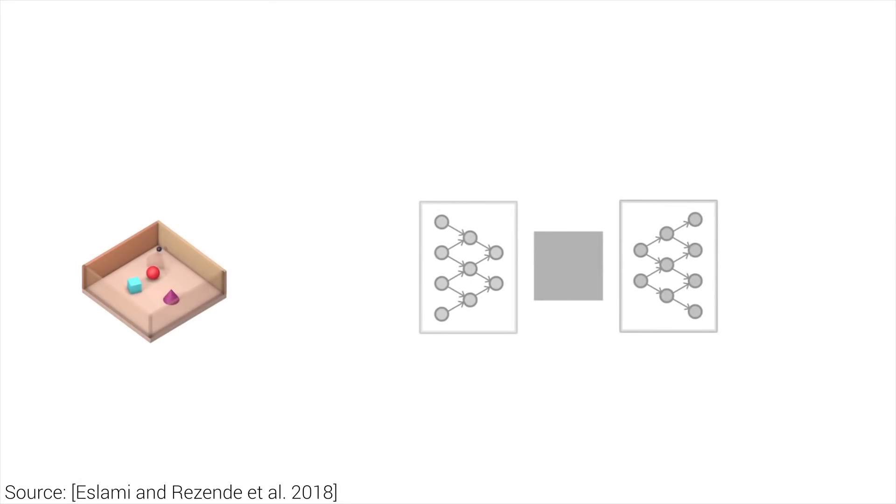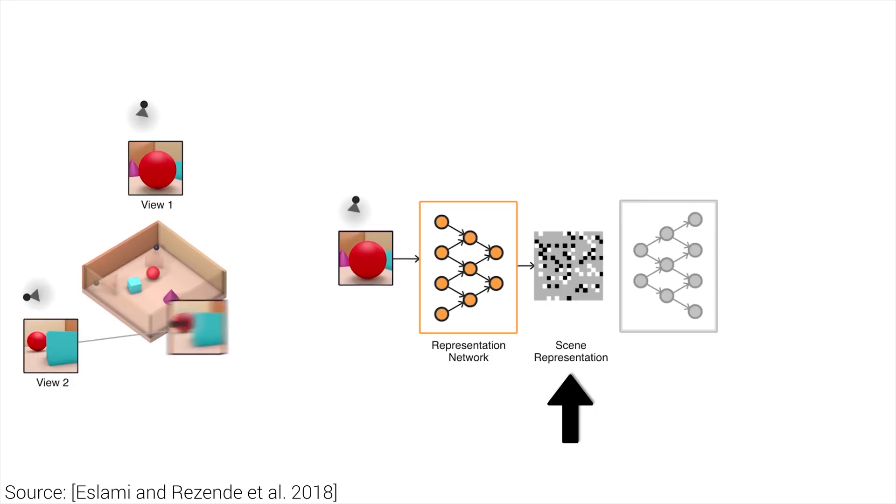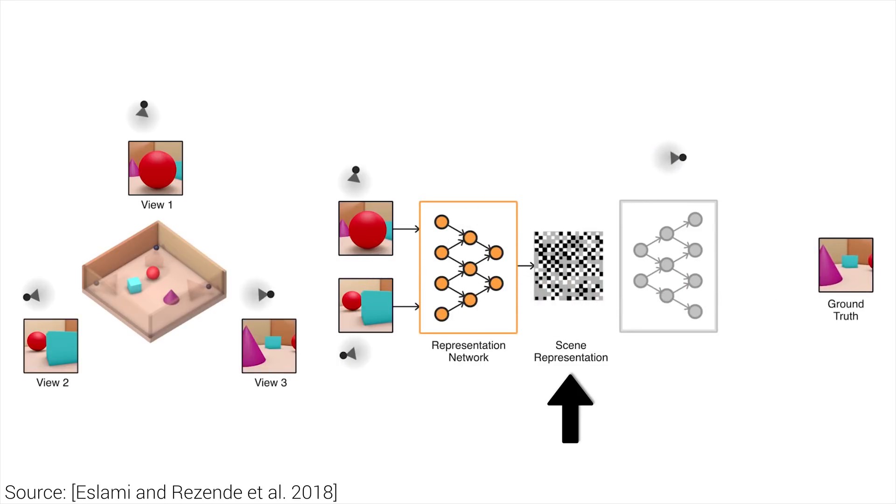So what does this do, and how does it work exactly? It contains a representation and a generation network. The representation network takes a bunch of observations, a few screenshots if you will, and then codes this visual sensory data into a concise description that contains the underlying information in the scene. These observations are made from only a handful of camera positions and viewpoints.